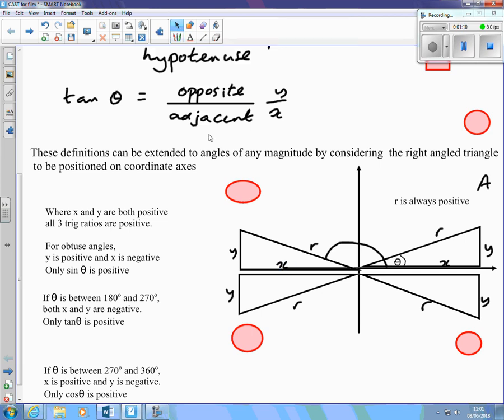Now, when I consider y over r, y is still positive, so sine theta is still positive, but x is negative. x over r will be negative. Cos theta is negative for obtuse angles.